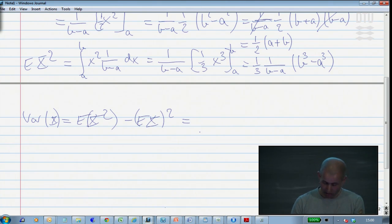Which means that I take 1 third, 1 over b minus a, b to the third minus a to the third, and then I take the mean of x, which I just found a second ago, which was a plus b over 2, and the square of that.